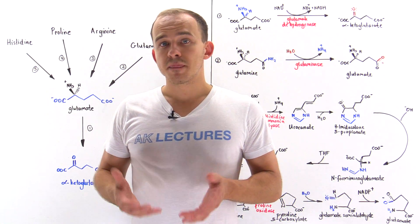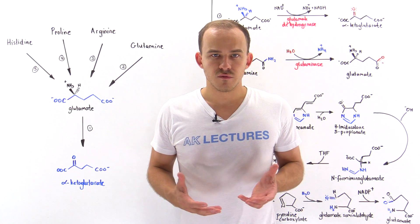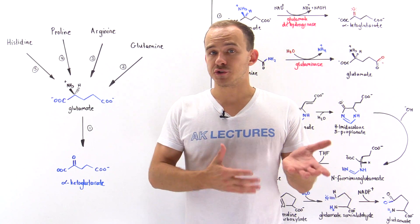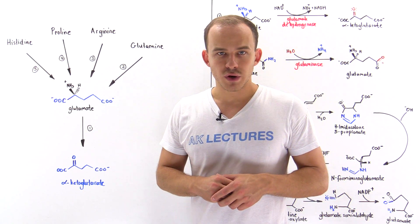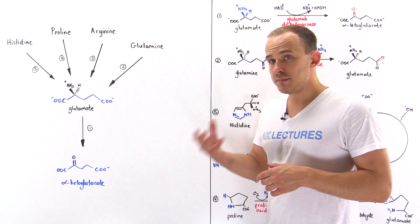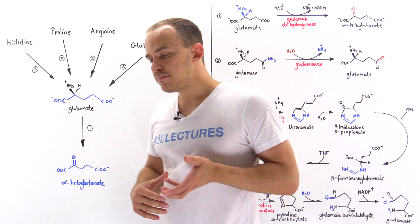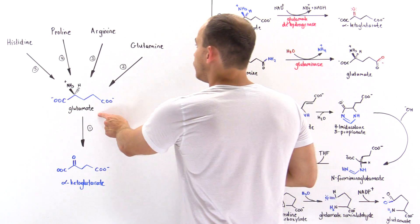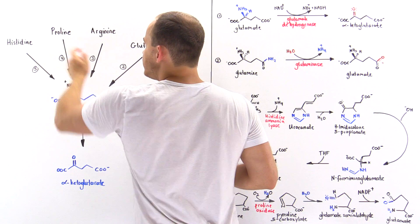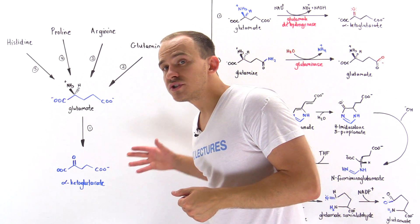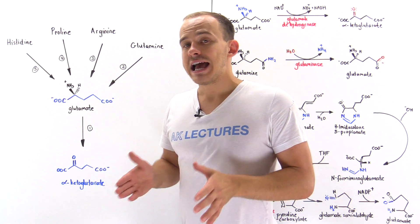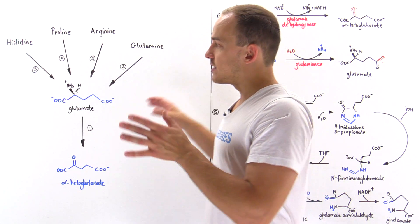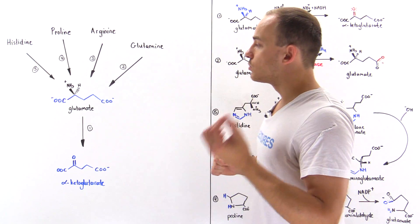Previously we saw how we can transform 6 of the 20 amino acids into pyruvate. Now we're going to discuss how we can transform 5 of the 20 amino acids into a 5-carbon intermediate molecule we call alpha-ketoglutarate. Alpha-ketoglutarate is an intermediate of the citric acid cycle. When our liver hepatocytes metabolize these 5 amino acids, they ultimately form alpha-ketoglutarate, which is transformed into oxaloacetate, and that oxaloacetate can be used in gluconeogenesis to generate glucose. That's exactly why these 5 amino acids are labeled as glucogenic.